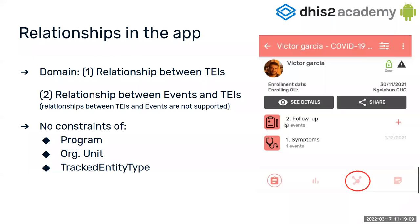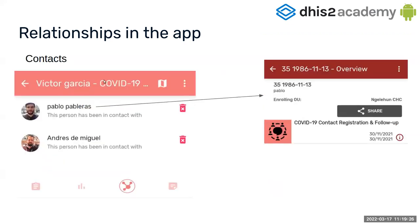Where can you see the relationships? If you go to the TEI dashboard, you can see at the bottom bar the third button, which has a circle. If you click on it, you will see a list like this one. In this list you can see that Victor Garcia has two relationships.